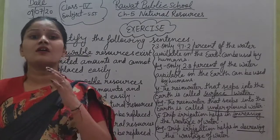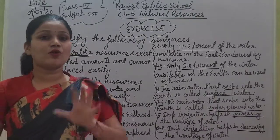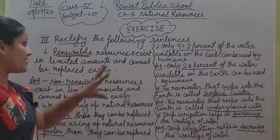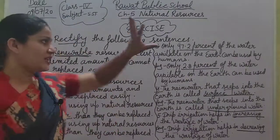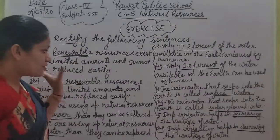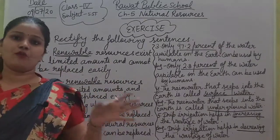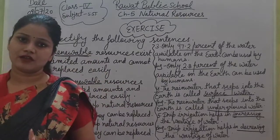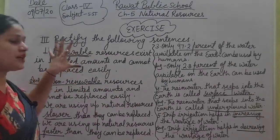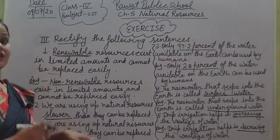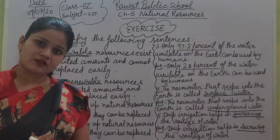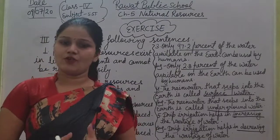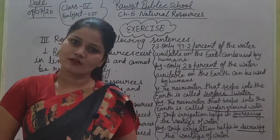Drip irrigation reduces — kam karti hai — water wastage. You have to correct the sentences in the same way as I did. Jaisi maine kiya hai, usi tarike se apni notebook mein, apni copy mein yeh work karna hai. First write the incorrect sentence and then write the correct sentence. That's all for today. I hope you all understand this topic.